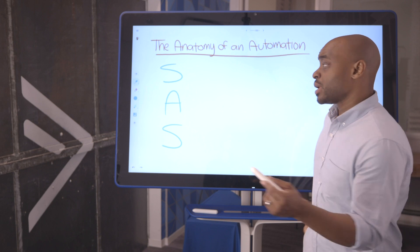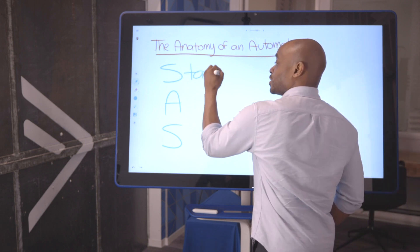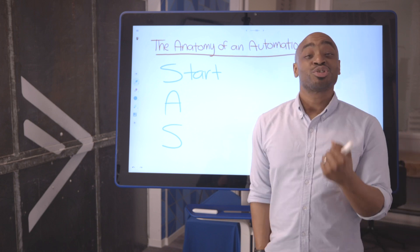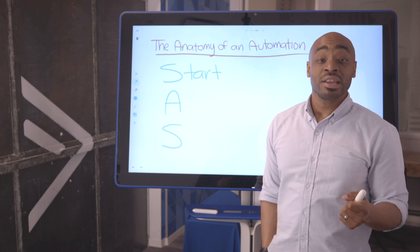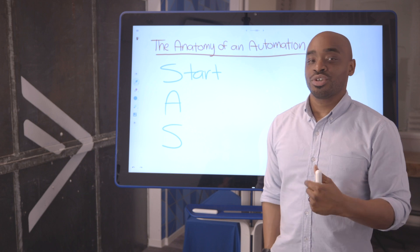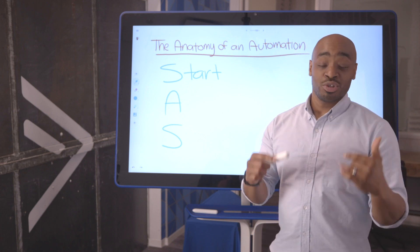So let's start with the first one. The first S is start. This represents start triggers in ActiveCampaign. There are over 20 ways that an automation can start. Think of start triggers as the front door to your automation. This is how contacts will enter into your automation.